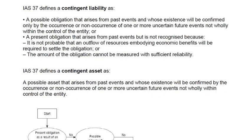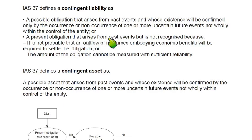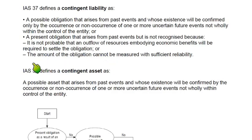A contingent liability also arises when there is a present obligation from a past event, but it is not recognized because it is not probable — meaning there is less than a 50% chance that an outflow of economic benefits is required. A third, rarer scenario is when both a present obligation and probable outflow exist, but the amount cannot be measured with sufficient reliability.